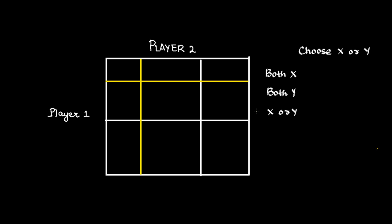Let us look at this simple game. There are two players, player 1 and player 2. They can choose either X or Y. If both of them choose X, then both of them get 5, 5. If both of them choose Y, both of them get 10, 10.